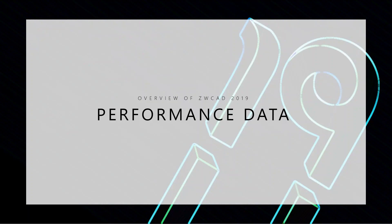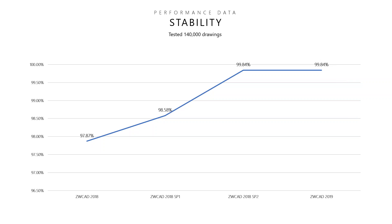Going into the performance data — to me, a product is all about stability. We have done extensive testing: over 140,000 drawings — very large drawings, complex drawings — opening, saving, changing file formats. ZWCAD 2019 is at 99.84% stability. That's as good as you're going to get — we're at the 99.9% level there, like mouthwash or hand sanitizer. It's very exciting to see how much the R&D team is focused on stability.